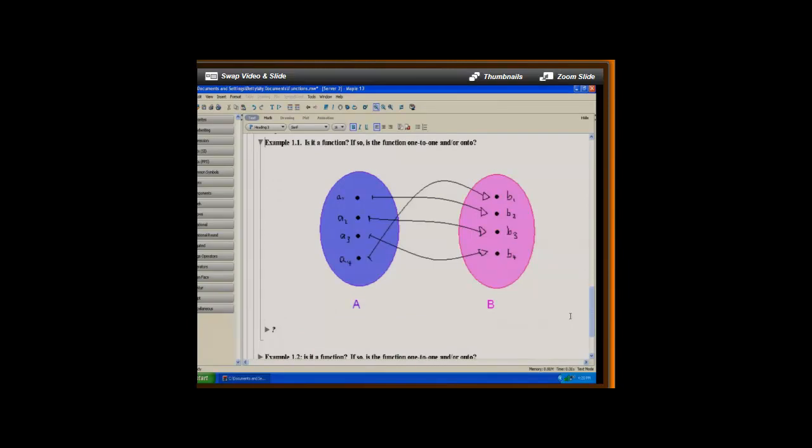So in the first case, we have elements of the set A, A1, A2, A3, A4 mapping to some elements of B, B1, B2, B3, B4. As we can see, A1 goes to B2, A2 goes to B3, A3 goes to B4, and A4 goes to B1.